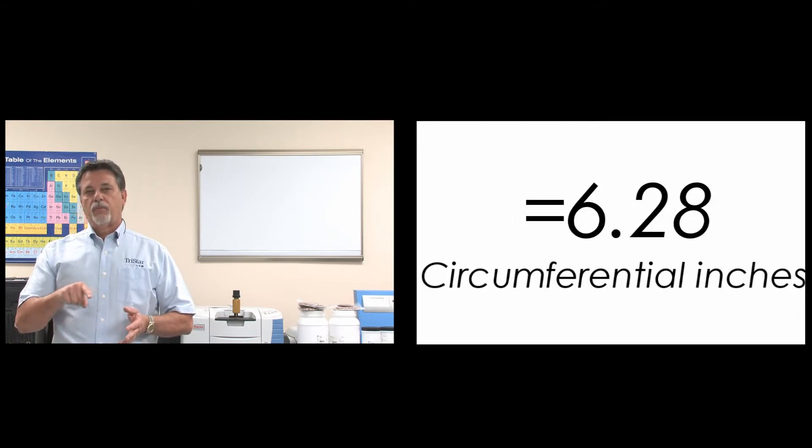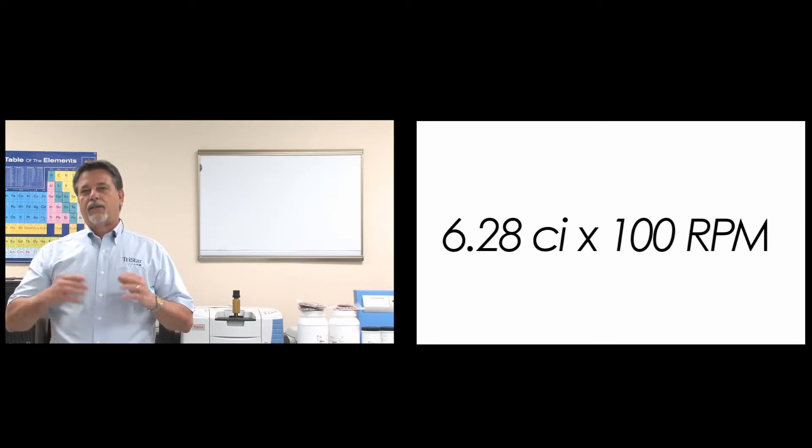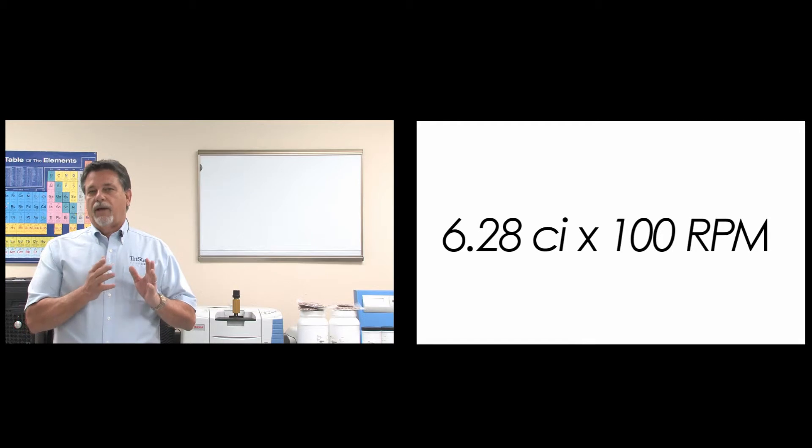That is the total number of circumferential inches around that shaft. Now multiply that times the RPM, which is a known number, and let's say in this case we're going to be running at 100 RPM.